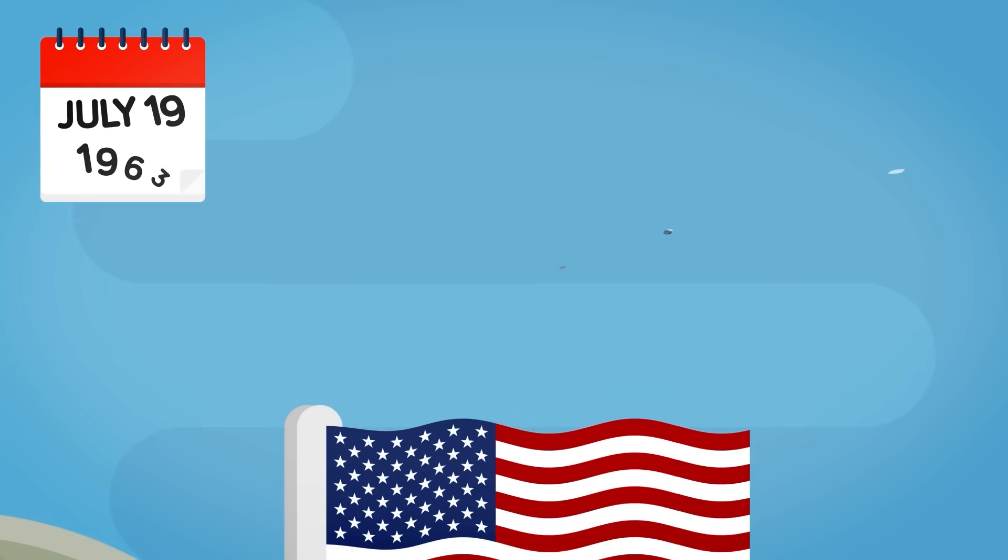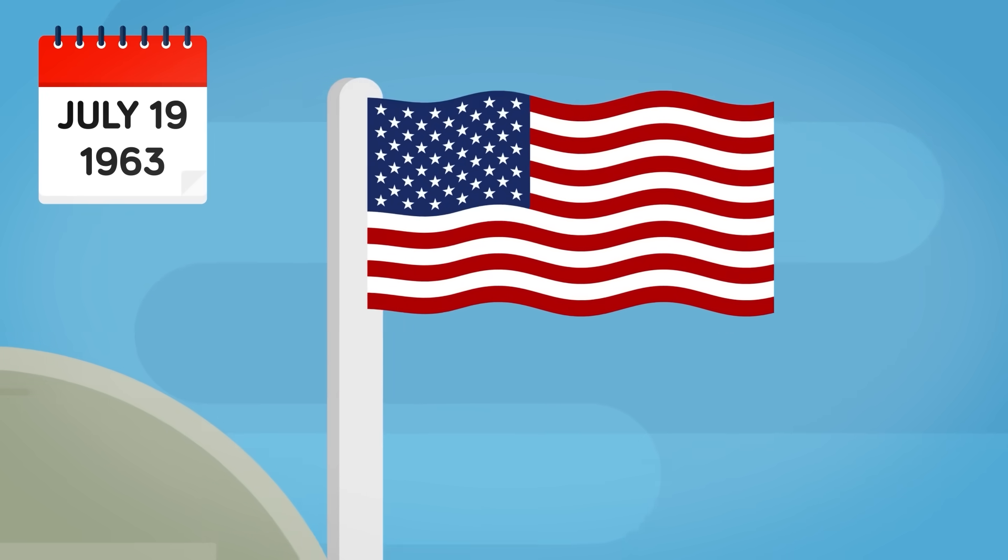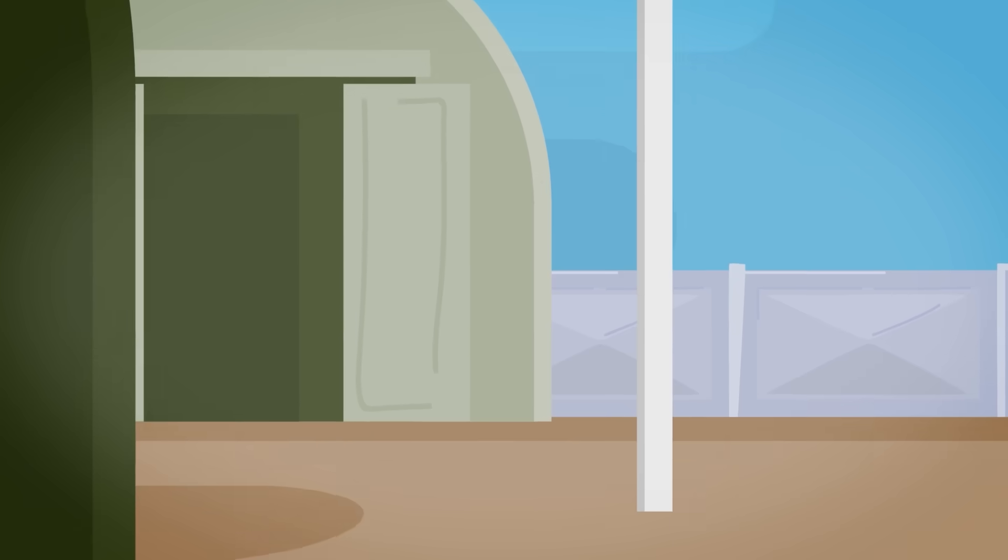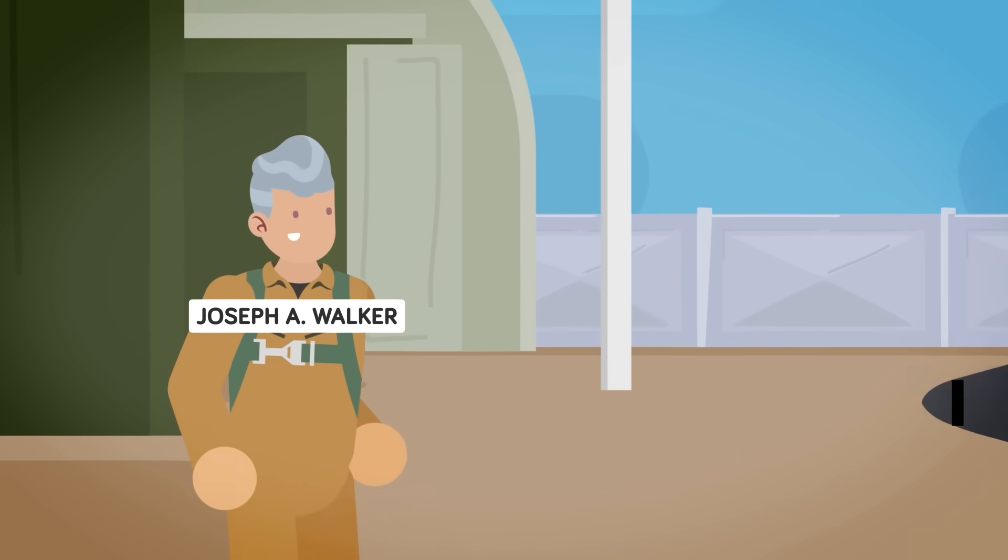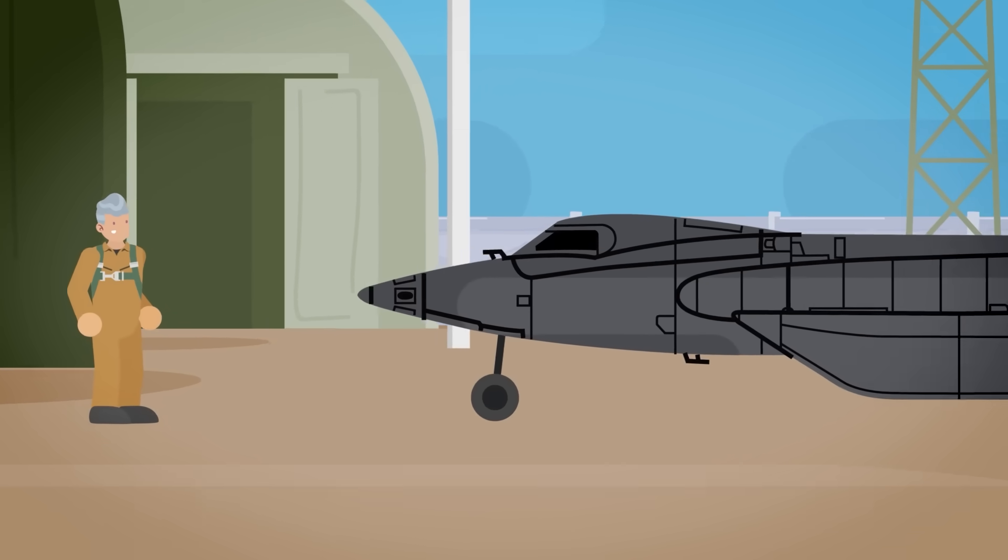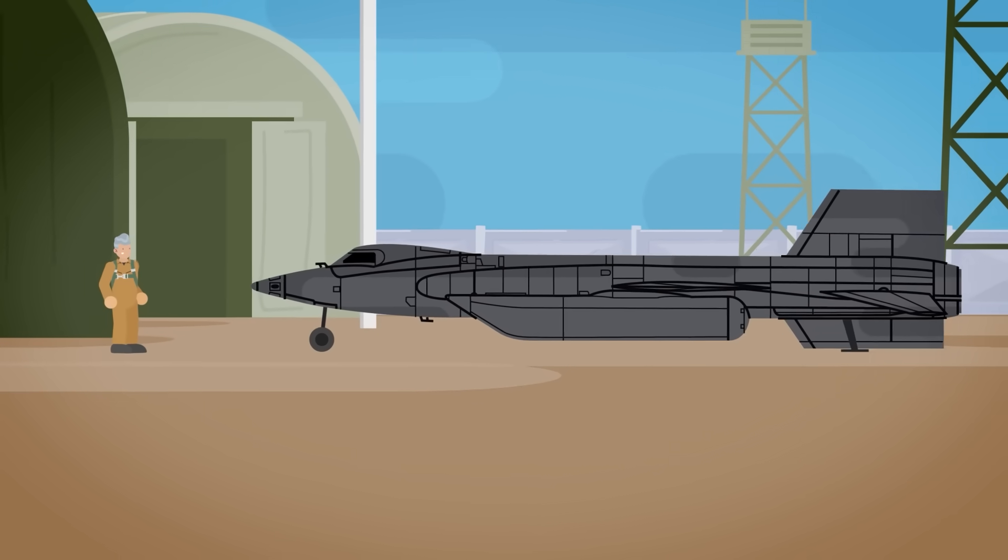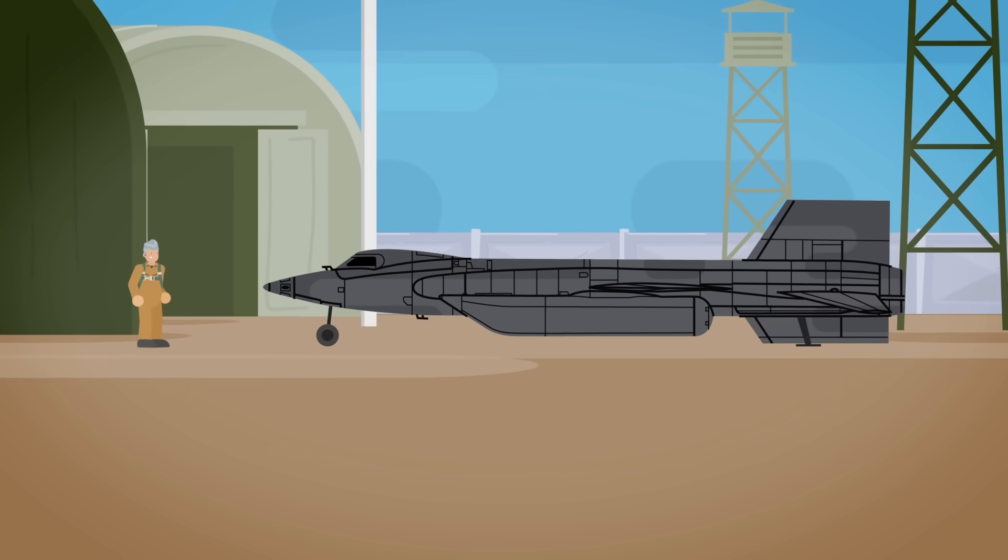On July 19, 1963, American World War II pilot, physicist, and astronaut Joseph A. Walker flew NASA's X-15 in the now famous Flight 90. During this flight, the craft reached an altitude of 106.01 kilometers, crossing the Kármán Line and entering space.